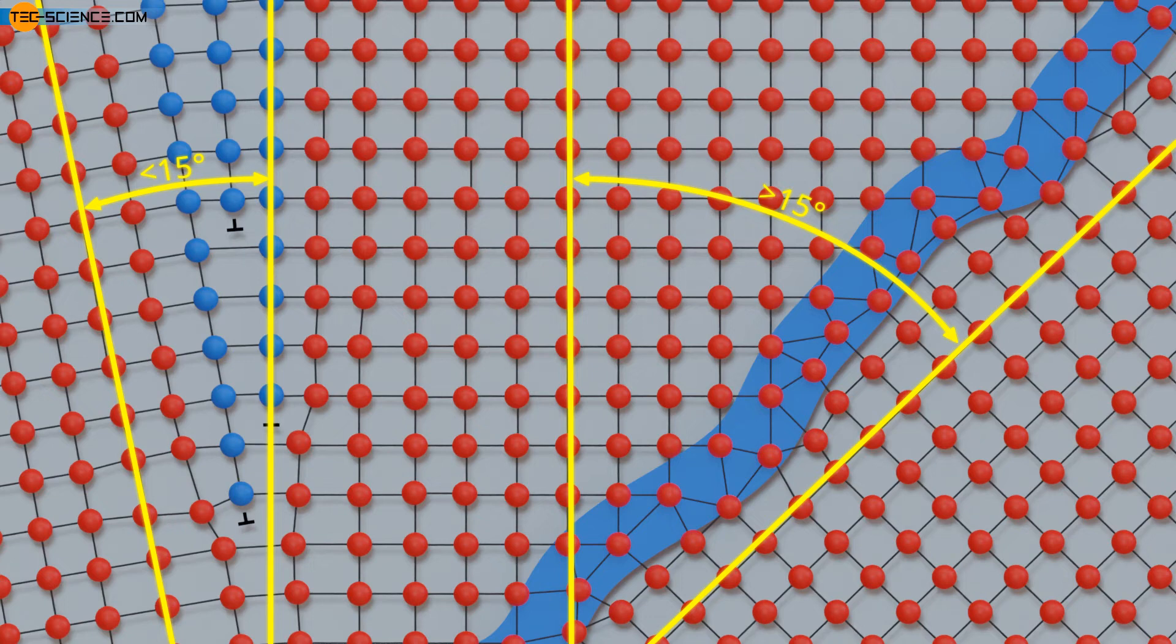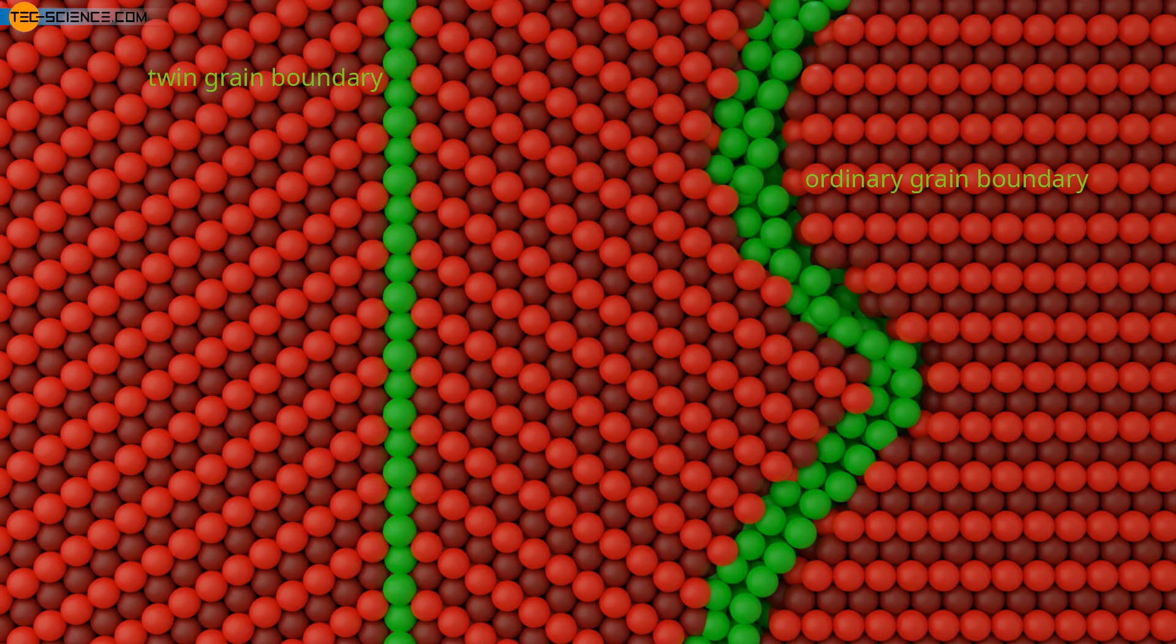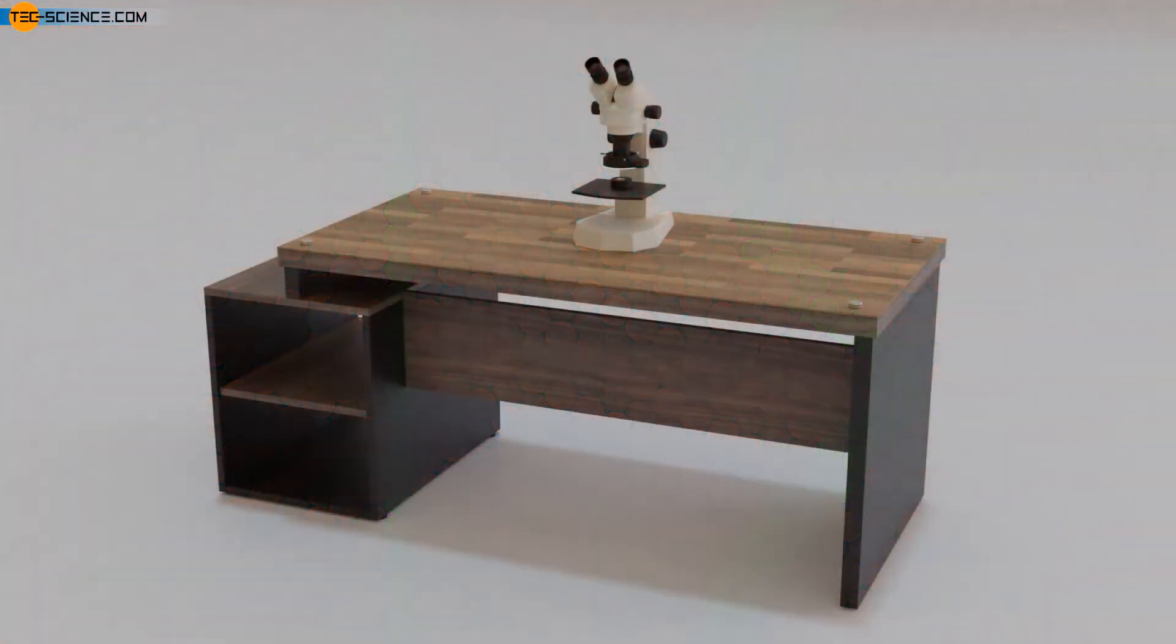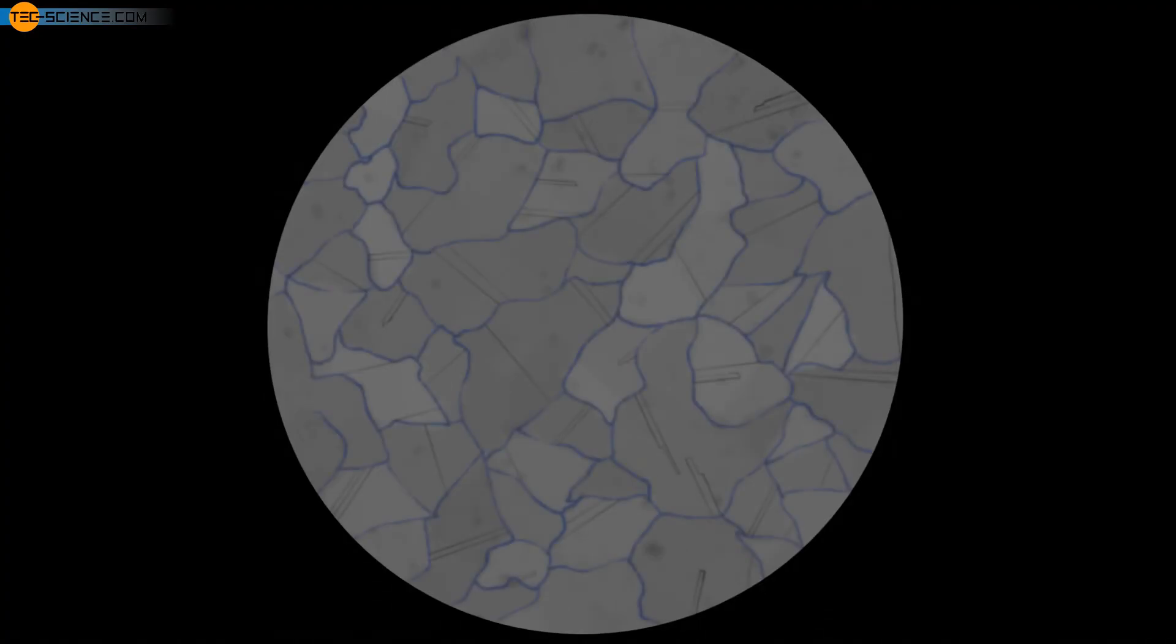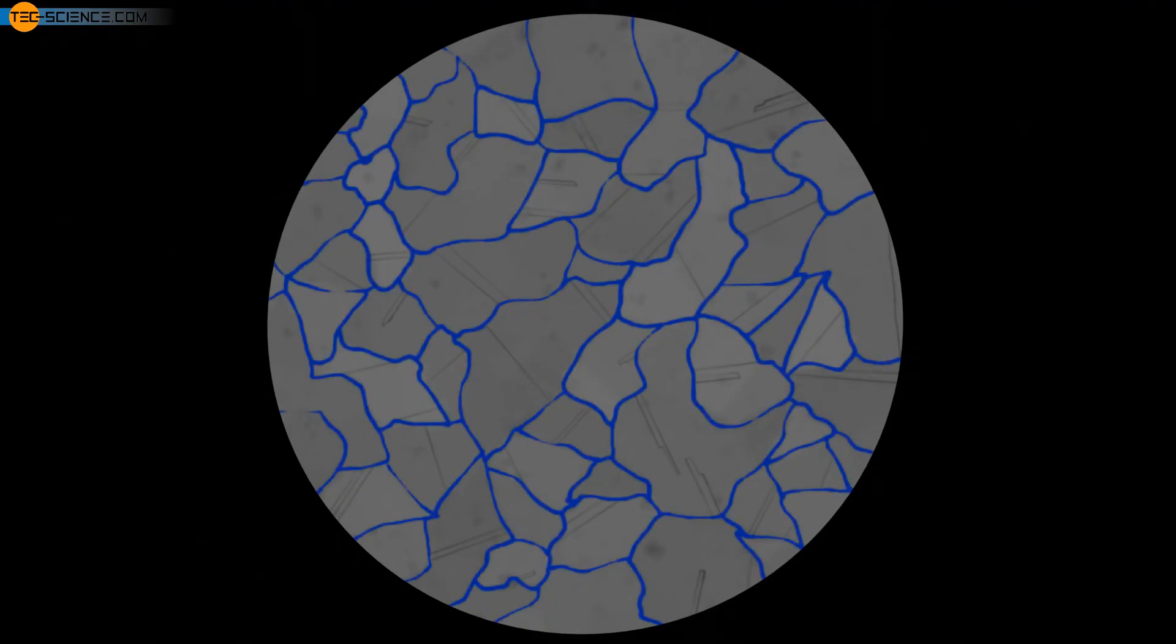A special type of grain boundary is the twin boundary. In this case, the opposing lattice structures are simply mirror images of each other. Such a twin boundary has high symmetry and therefore low energy. Twin grain boundaries are very frequently formed in the metals brass, copper and in austenitic steels. While ordinary grain boundaries tend to be characterized by curved lines in the microstructure, twin grain boundaries are visible under the microscope as straight lines.